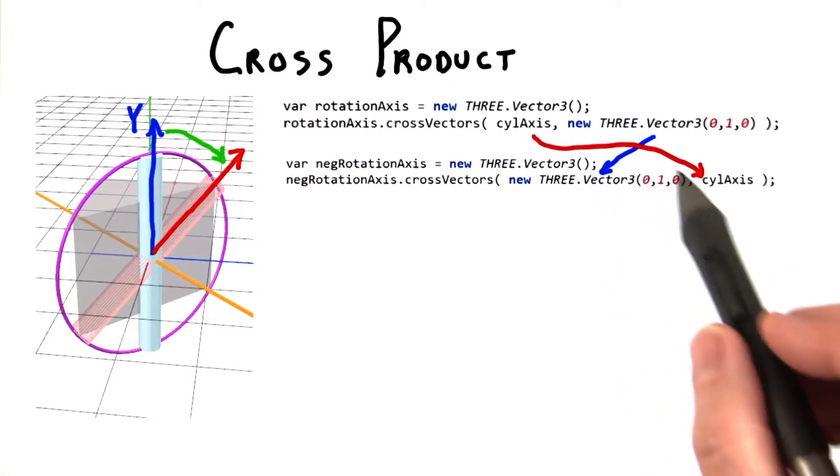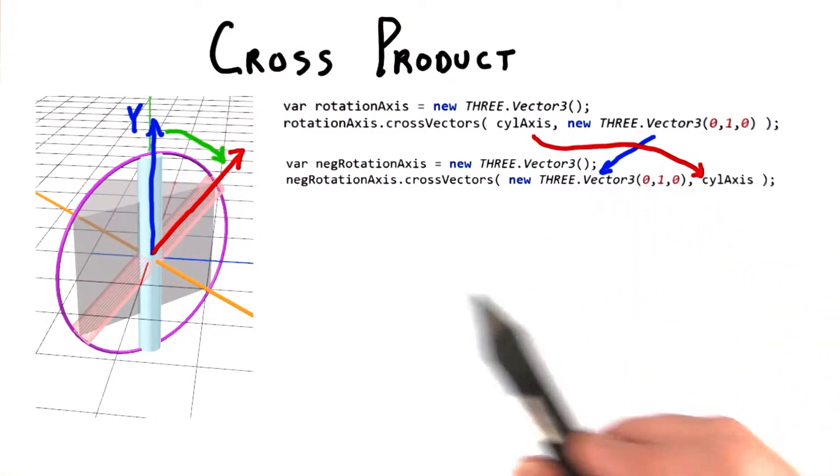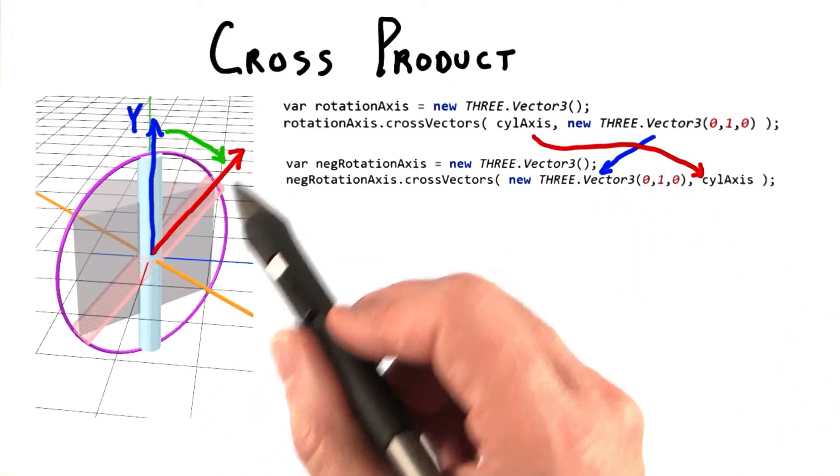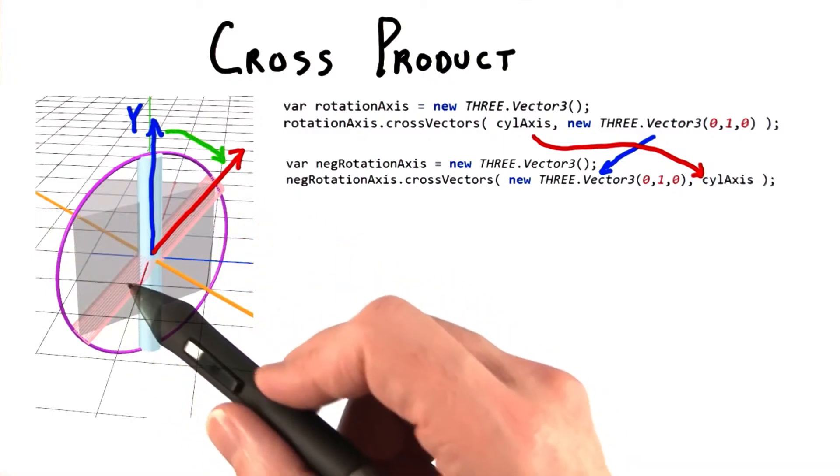If we computed the cross product of these two vectors in the opposite order, we would go from the y-axis to the cylinder's vector, and would get the opposite rotation axis.